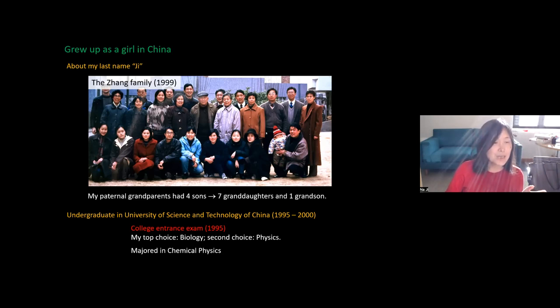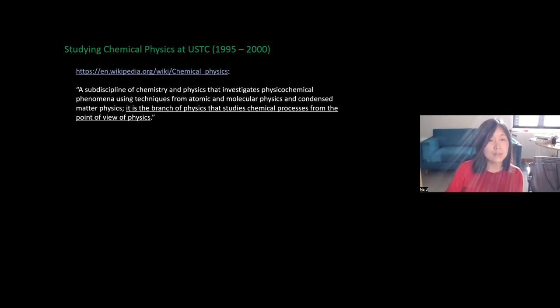What is chemical physics? It's basically the branch of physics that studies chemical processes, similar to biophysics which uses physics tools to study biological systems. It was a major I really enjoyed because we got to learn courses from organic biochemistry all the way to quantum mechanics and solid state physics. Very quickly, I became the top student in my class with the highest GPA.